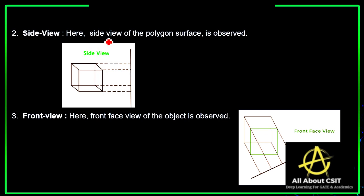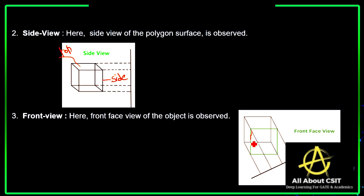In the side view, the side view of the polygon surface is observed. In the front view, the front face view is observed, which is projected perpendicular to the view plane, with the lines parallel to each other.